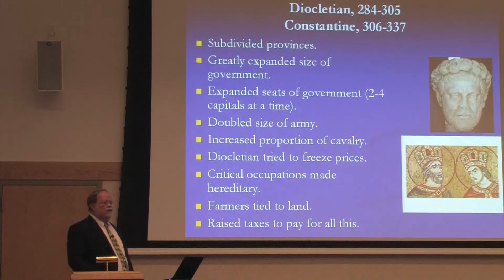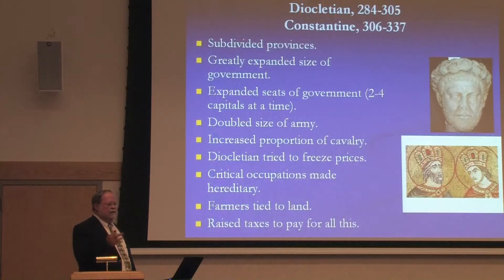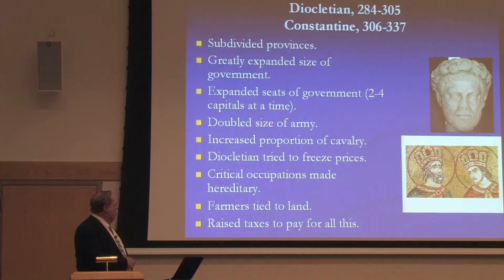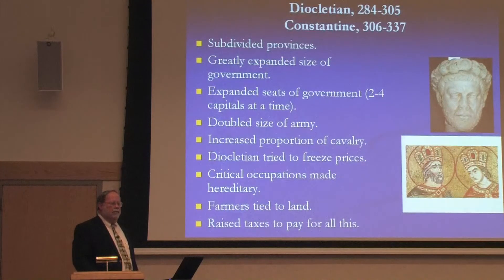The government was dealing with a declining population, and so critical occupations were made hereditary. Think back to the element of complexity that consists of organization, control, and regulation of behavior. You can see that going on in trying to freeze prices and making critical occupations hereditary. Farmers were tied to the land — this was the single most critical occupation because farmers paid the bulk of the taxes.